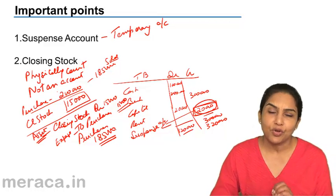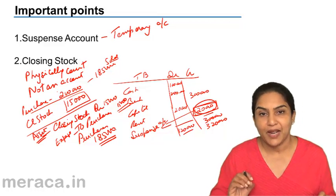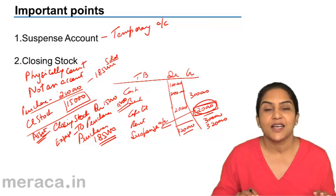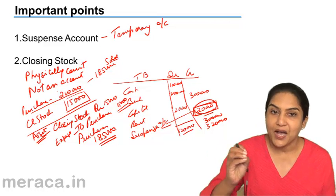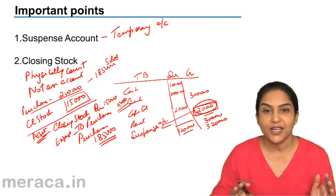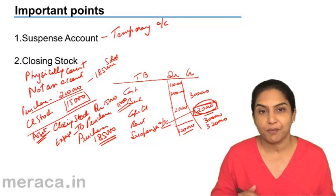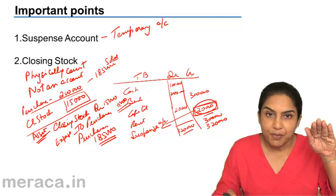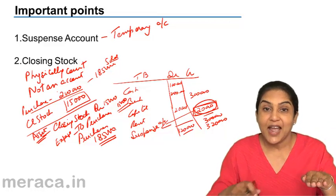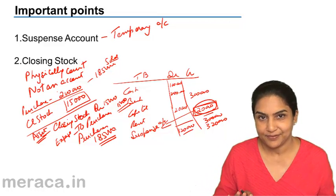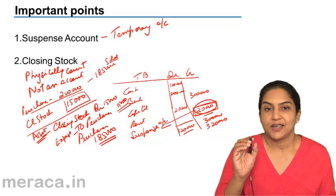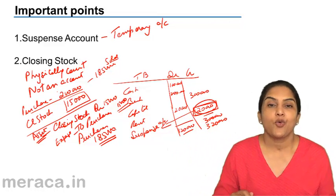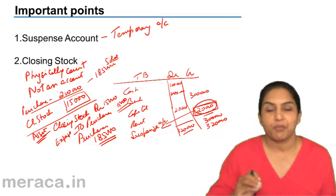Usually we do not see closing stock in a trial balance. If we see a closing stock balance in the trial balance, it means the accountant has physically counted the stock and included it by passing an entry — closing stock account debit to purchases — because our double entry must agree; we cannot just include closing stock without an entry. Closing stock is an asset; when purchases is credited, the purchase balance comes down, so we reduce purchase expense and increase closing stock asset. Otherwise, closing stock is counted and appears after the trial balance, and adjustments are made when we prepare the final accounts.